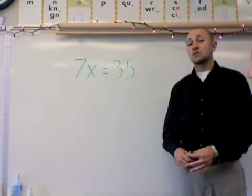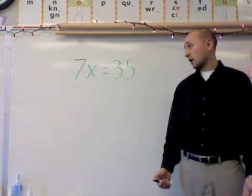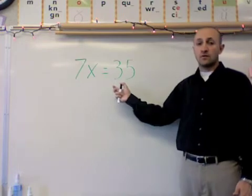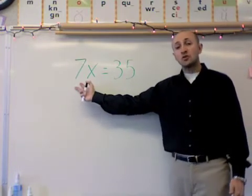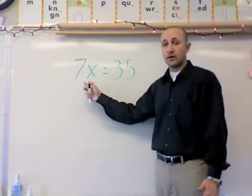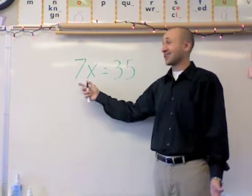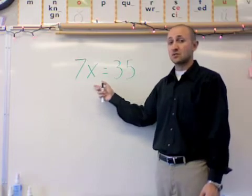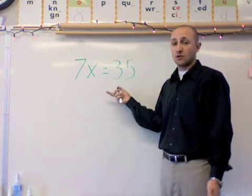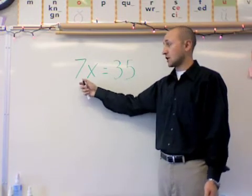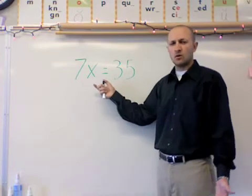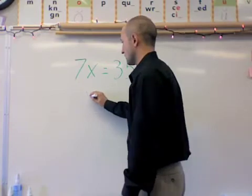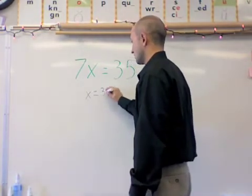For my third and final step of solving equations using mental math, I'm going to look at a problem this way. 7x is equal to 35. Now remember, whenever we have two numbers next to each other or a number and a variable, it's the same as saying 7 times that number or variable. So I have 7 times x is equal to 35. Now if I use mental math, I can say 7 times what equals 35? Well, we know 7 times 5 equals 35. This would mean x equals 5.